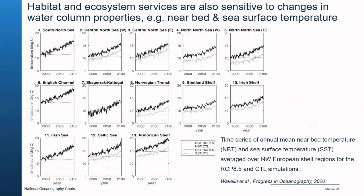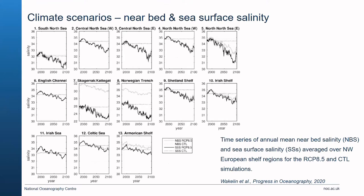Models can also be used to look at habitats and change. These example model runs look at future change — the horizontal lines represent near-bed temperature and sea surface temperature if current conditions continued, while the more spiky projected lines show how temperature changes in time at different parts of the water column under different concentration pathways. You can also look at salinity changes at the surface, near bed, or any point within the water column, giving a better understanding of how habitats might respond and change in the future.